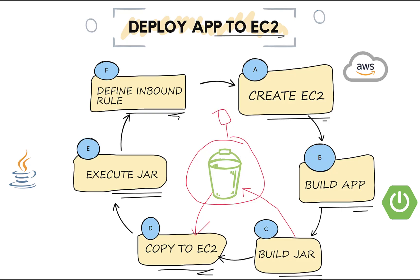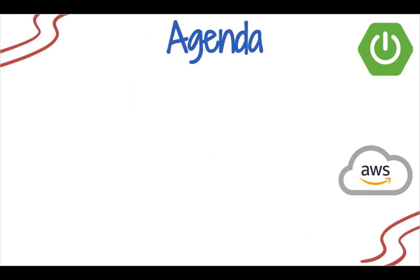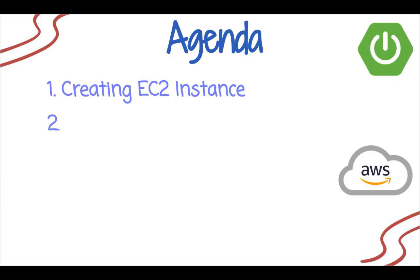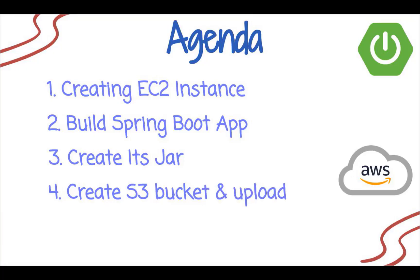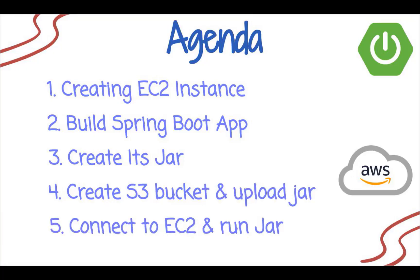While creating the S3 bucket, we will also look at the permissions part so that we don't make our resources public. So this is the agenda for today's video: creating an EC2 instance, creating a Spring Boot application and its JAR right from scratch, creating an S3 bucket and uploading the JAR there, copying the JAR from S3 to EC2, running the JAR and accessing the application.